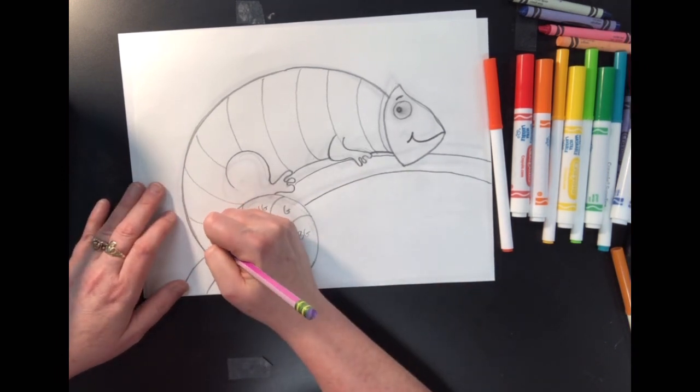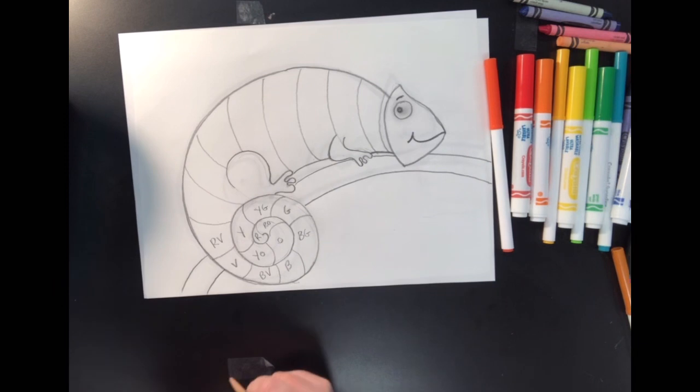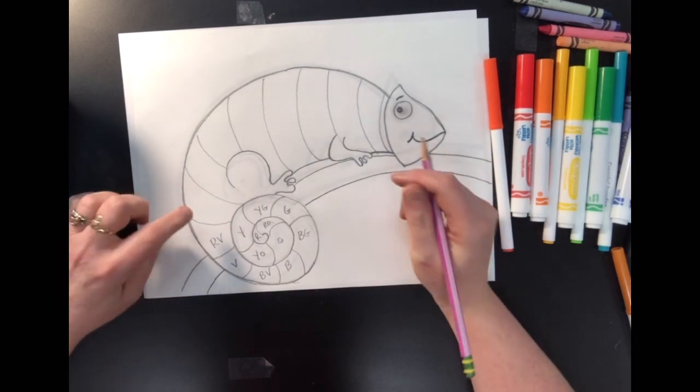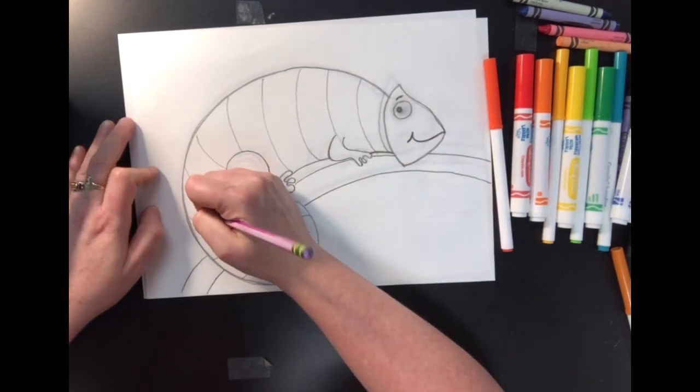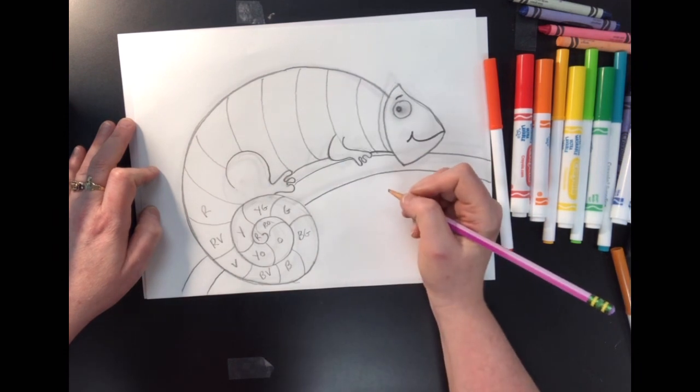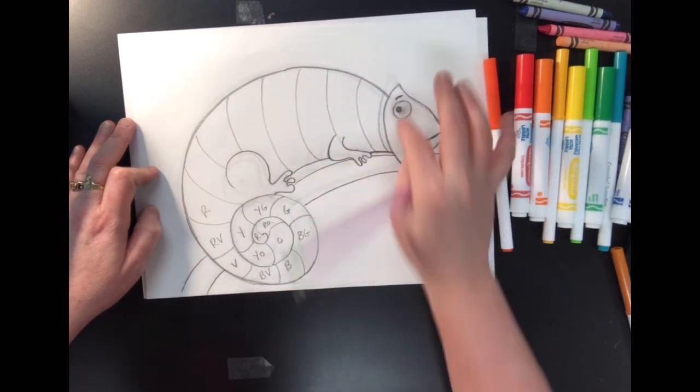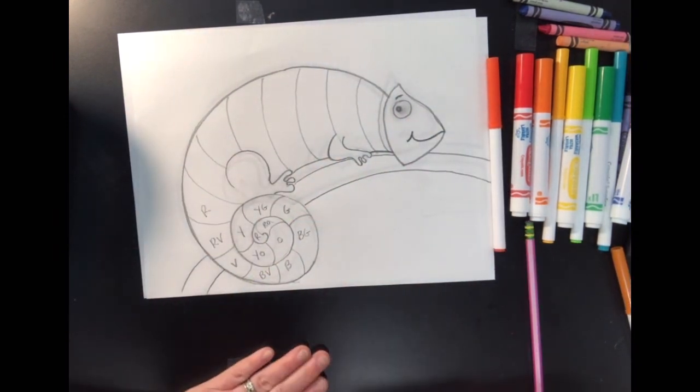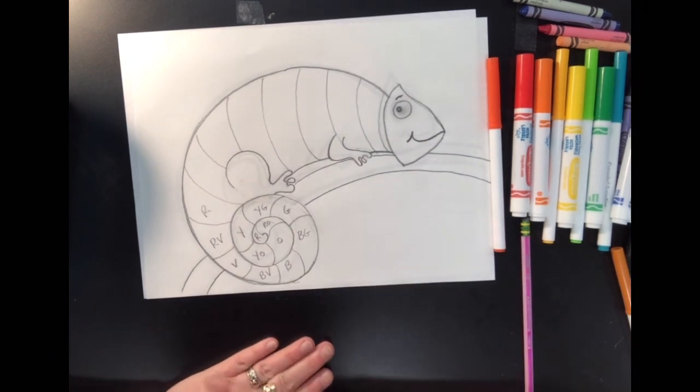And then violet. And the last one right here is red, violet, which is the same as magenta. Then I would start over again. Red, right from the beginning. And I would keep going. So, you can do either color wheel that you like.